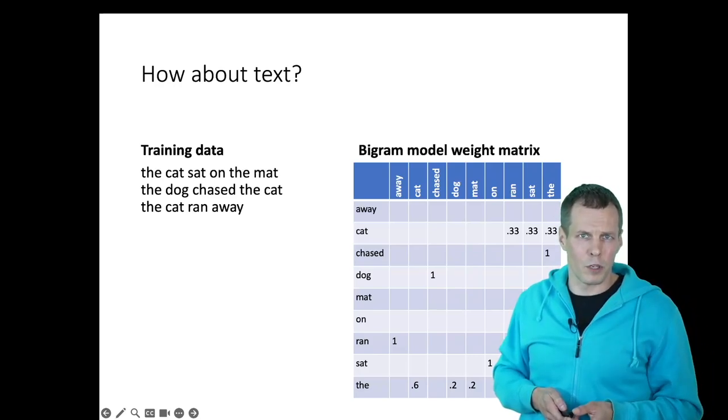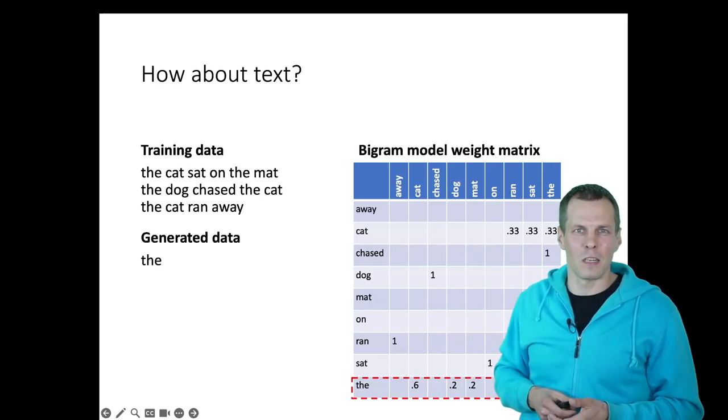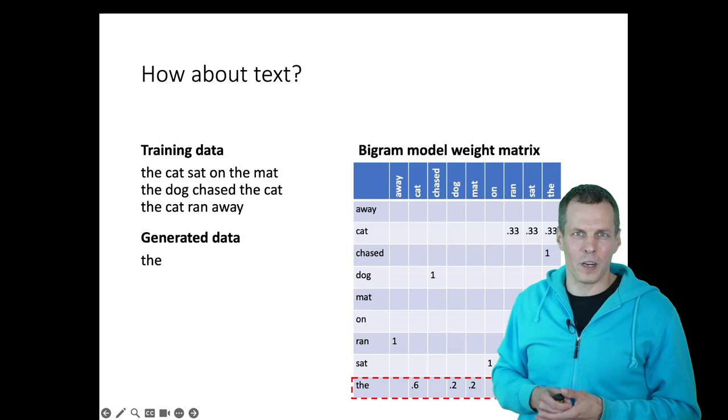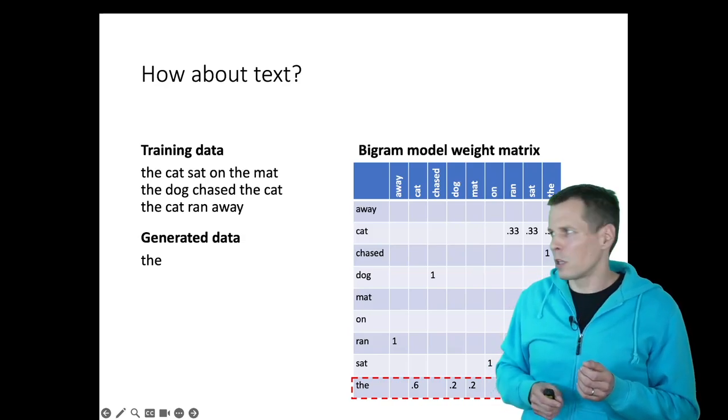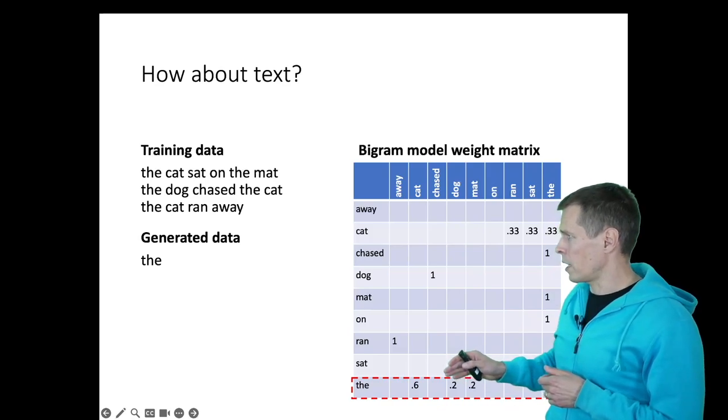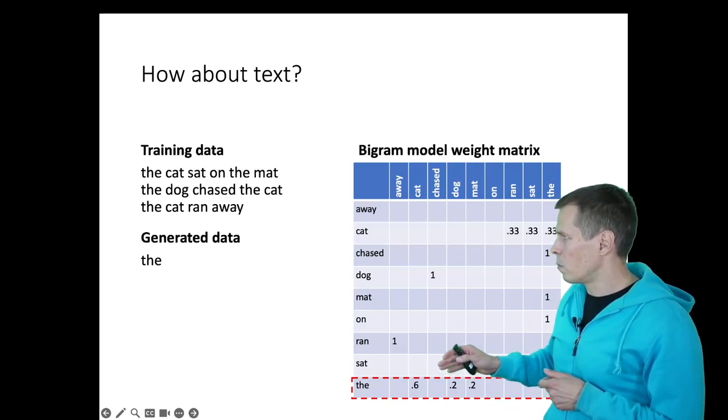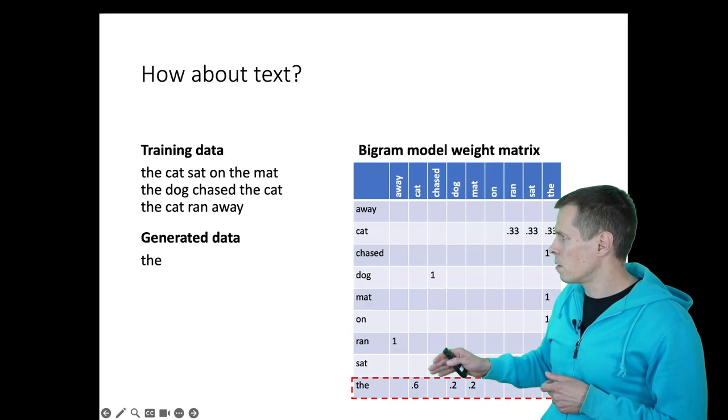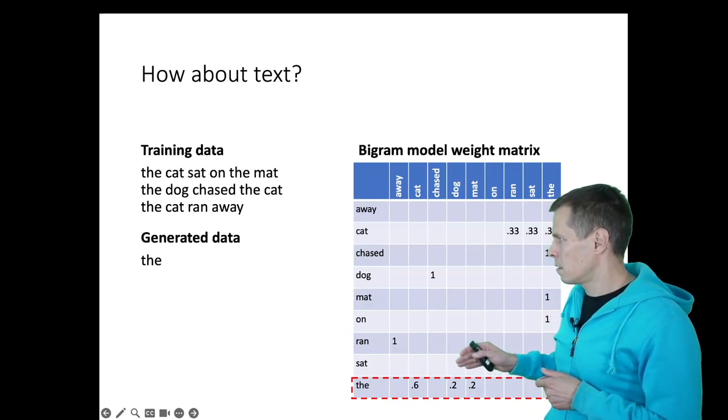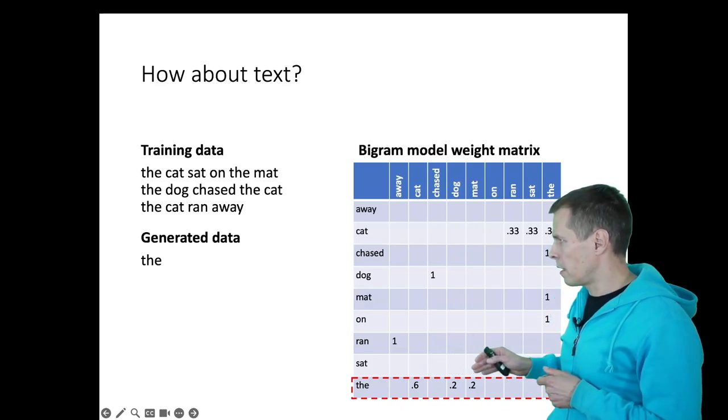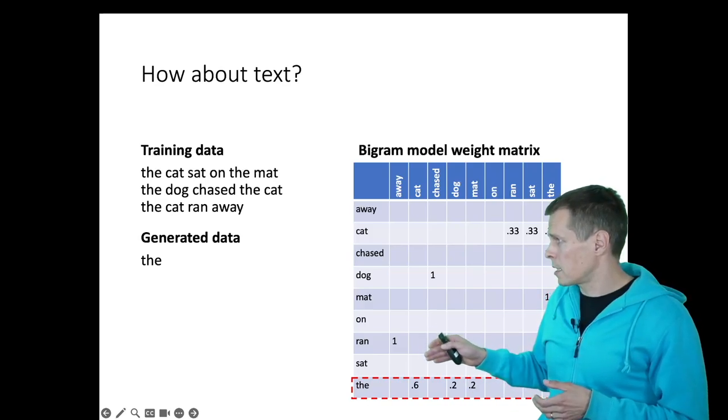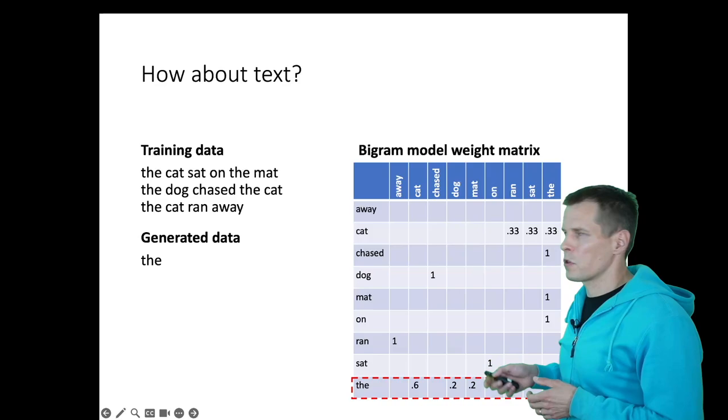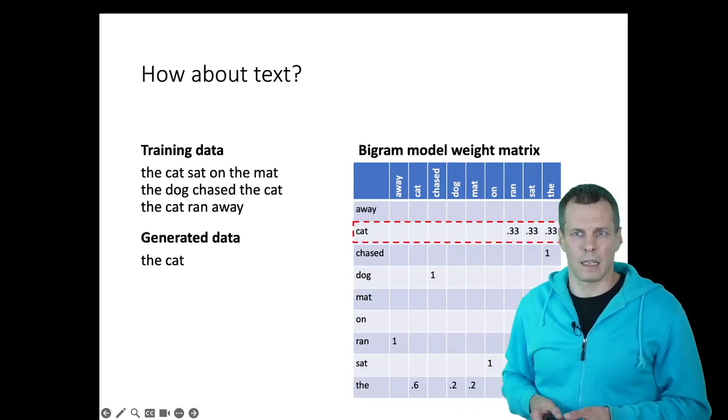We can start using this model to generate data. And this is what large language models do. So we have an initial prompt. This is what we would write to ChatGPT, for example. We just start with 'the.' And then what the model looks at, it looks that, okay, the word is 'the.' When we predict the next word, we have 'cat' 60%, 'dog' 20%, and 'mat' 20%. And it randomly picks one of these. It picks 'cat' by random.